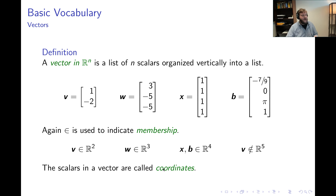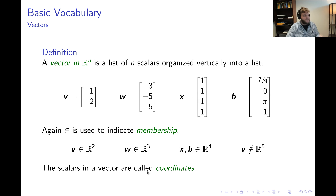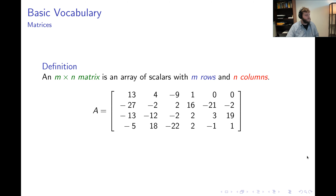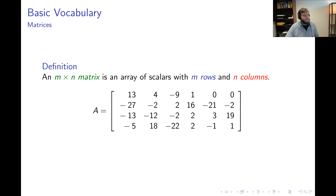If we're referring to the entries inside of a vector, we use the term coordinates. The scalars inside of a vector are called its coordinates. Now on to the hero of the course: the notion of an M by N matrix.